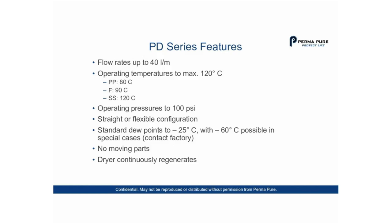Operating pressures go up to 100 psi. They're available in straight or flexible configuration — we have versions with a rubber shell that allow you to move the dryer around to fit into your equipment. Standard dew points reach minus 25 degrees C, with minus 60 degrees possible in special cases. There are no moving parts, and the dryer continuously regenerates, meaning moisture transfer is an intrinsic property of the membrane itself.